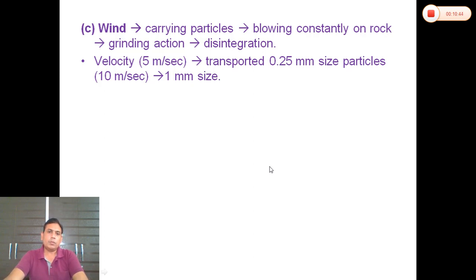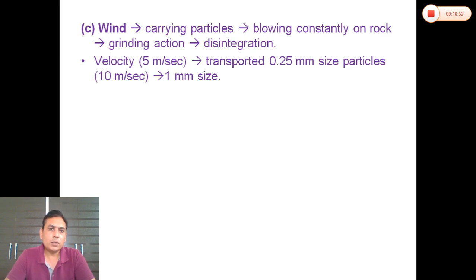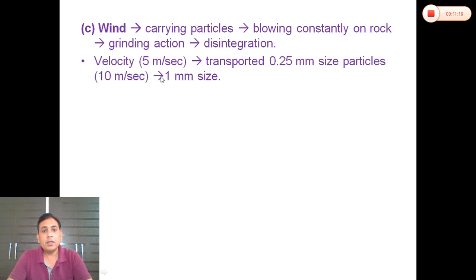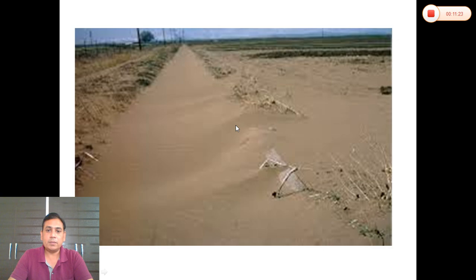When wind blows at very high speed, it carries particles. Blowing constantly on rocks, the grinding action is relentless, and small amounts of rock and mineral particles are removed and carried away — this is called wind disintegration. When wind velocity is 5 meters per second, it transports 0.25 mm size particles; at 10 meters per second, it transports 1 mm size particles. Here we see how rock is weathered by wind.